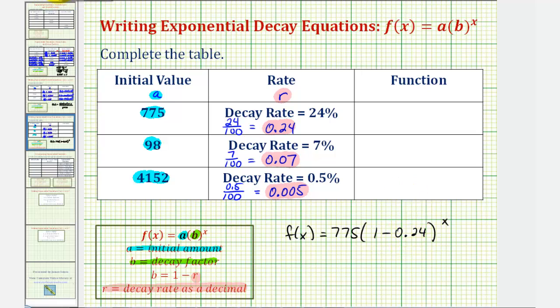And therefore, the exponential decay function would be f(x) equals 775 times the base of 0.76 raised to the power of x.